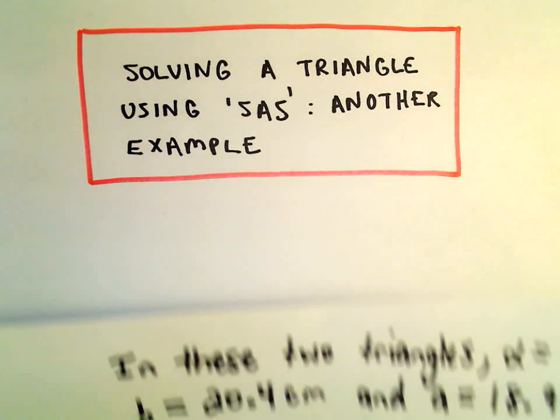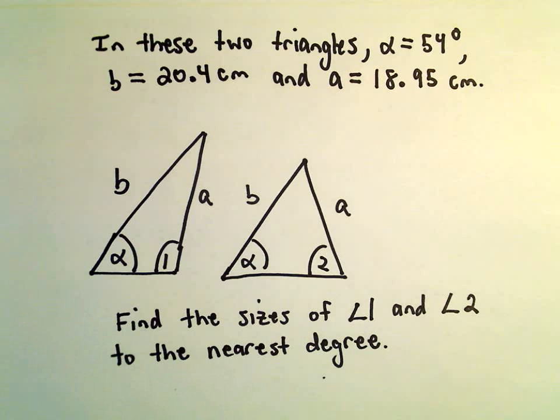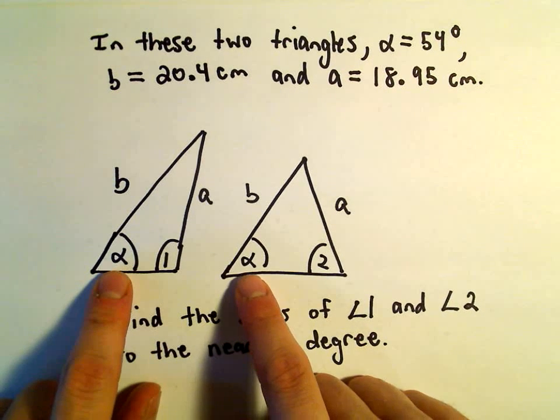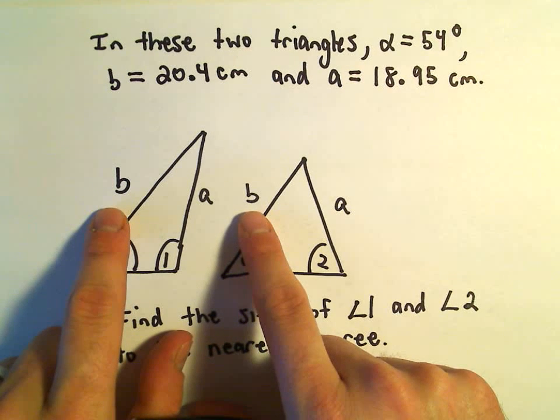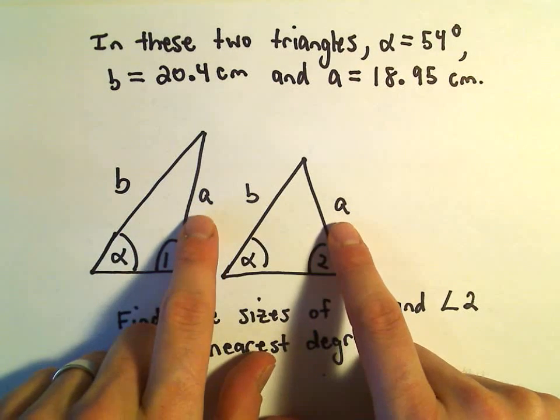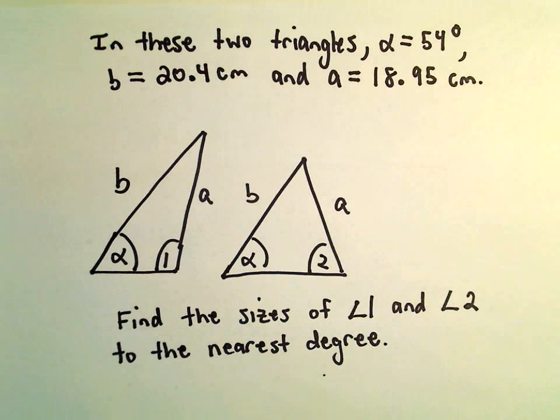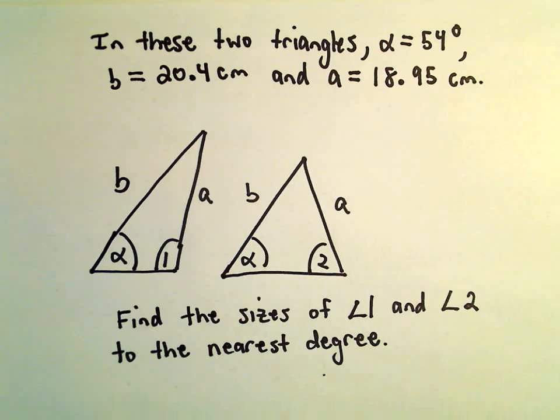All right, in this video we're going to do another example, one that I think is maybe just a little trickier. So we've got two triangles. Notice they both have an angle of alpha, which is 54 degrees. They both have a side length of B, which is 20.4 centimeters. They both have a side length of A, which is 18.95 centimeters. We want to find the sizes of angle 1 and angle 2 to the nearest degree.